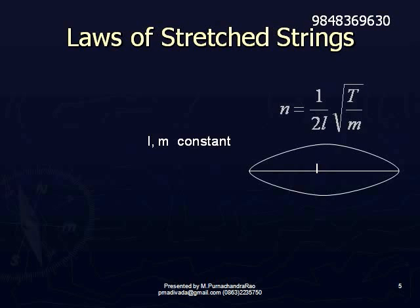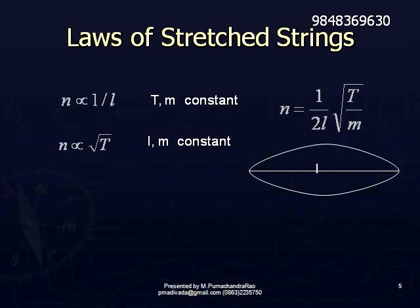The first law states that N is proportional to 1/L when the tension and linear density are constant.